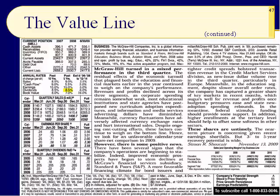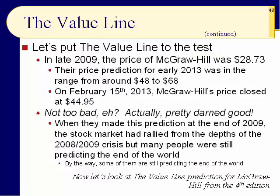Slide 48: let's put Value Line to the test. In late 2009, the price of McGraw-Hill was $28.73. Their price prediction for early 2013 was in the range of $48 to $68. On February 15, 2013, McGraw-Hill's price closed at $44.95. Not too bad — pretty good, especially considering that when they made this prediction at the end of 2009, the market had just rallied from the depths of the 2008–2009 crisis.